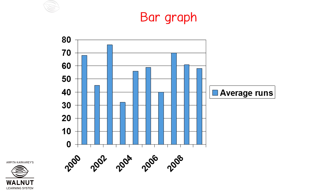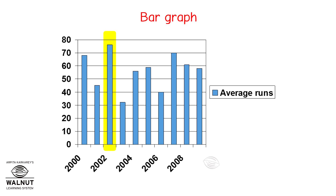Do you think it's easy to analyze information presented like this? Yes, you can quickly say at a glance in which year the batsman had the best performance and in which year his performance was poor. You do not have to search through a table and look for the highest and lowest values. So you can already see how bar graphs make information simple for us. When was the performance of the batsman the best? It was in 2002. And when was it the worst? The next year, 2003.